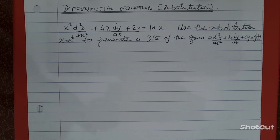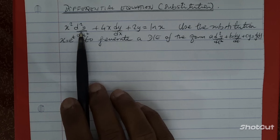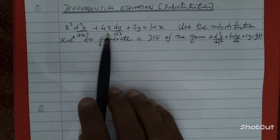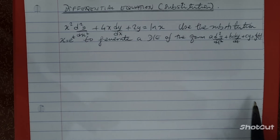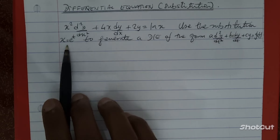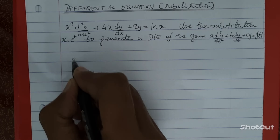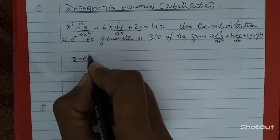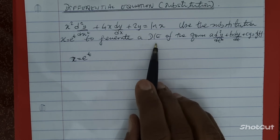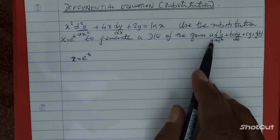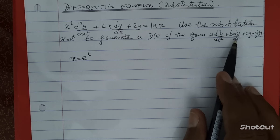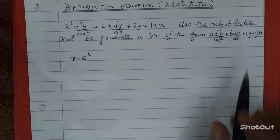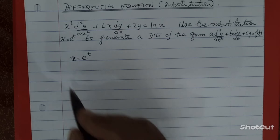What we have here is a simple differential equation: x squared times d²y/dx² plus 4x dy/dx plus 2y is equal to ln x. We need to use the substitution x is equal to e to the t to generate a differential equation of the form a·d²y/dt² plus b·dy/dt plus cy is equal to g(t).